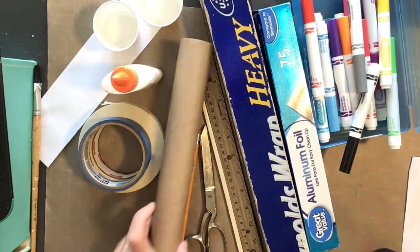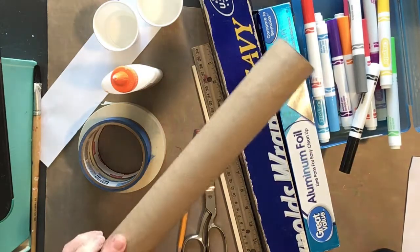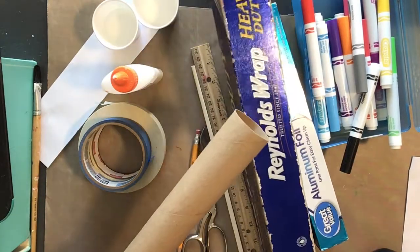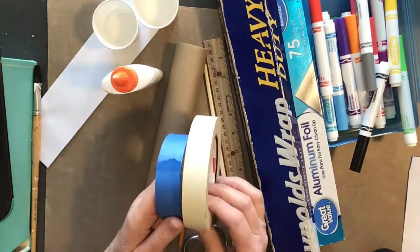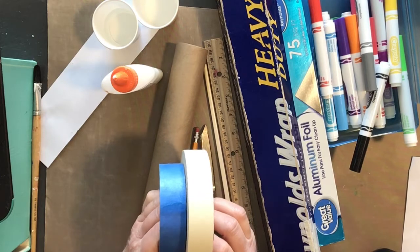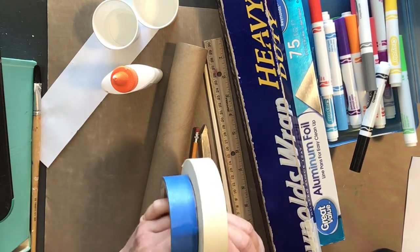For this project you're going to need a cardboard tube, some aluminum foil, and some masking tape or any kind of tape will do, but masking tape works the best.